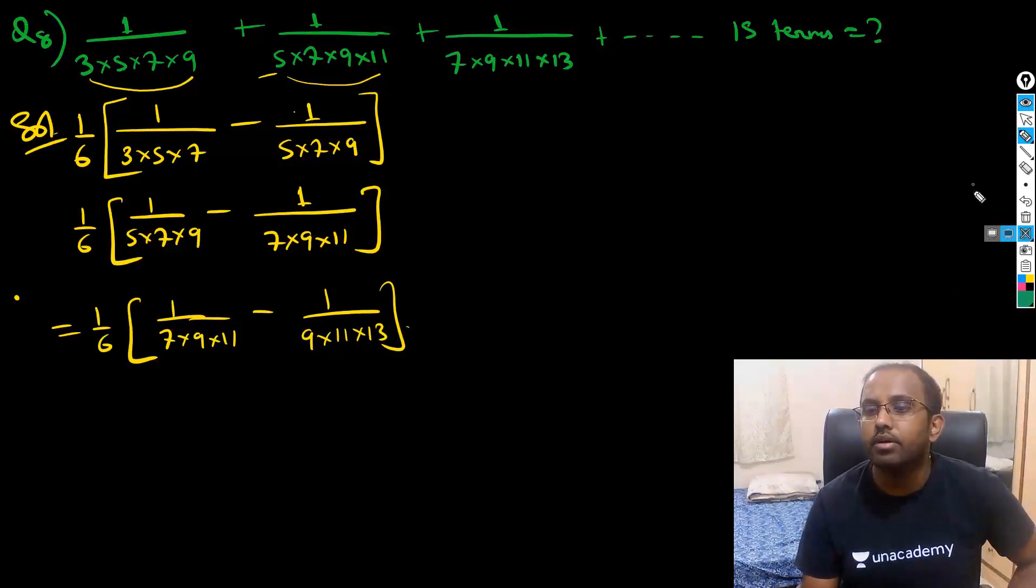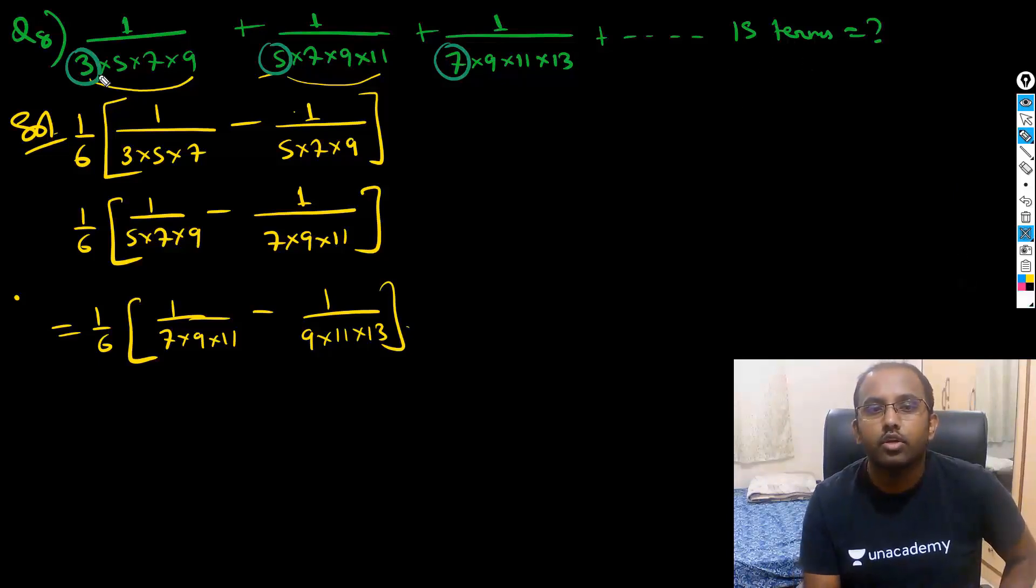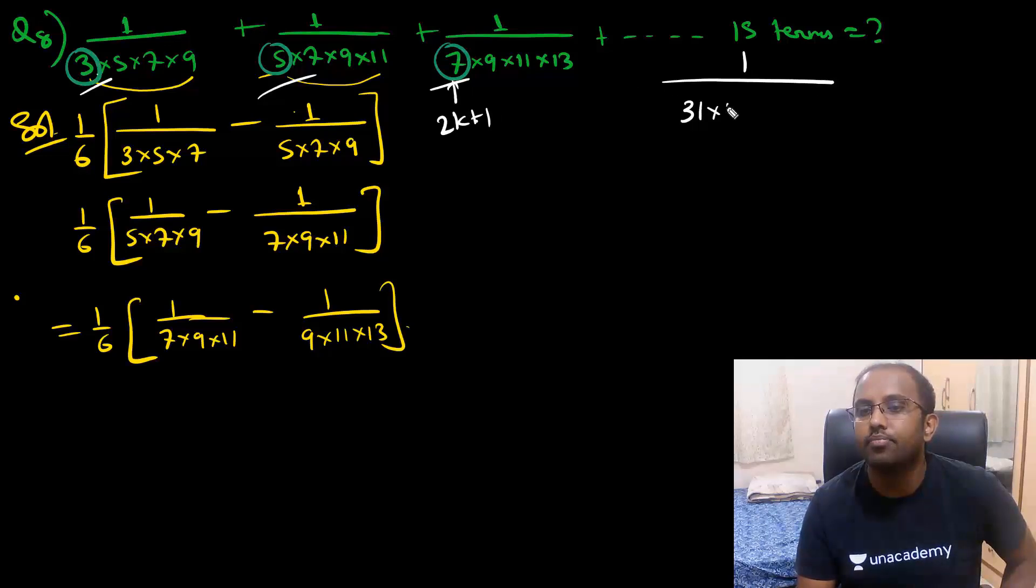What is the 15th term? Starting term is 3, then 5, then 7 - all are odd numbers. So 2k+1 odd numbers, right? So the 15th term will occur at k equal to 15, that is 31. That is 1/(31×33×35×37).